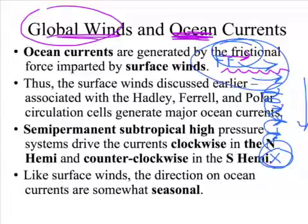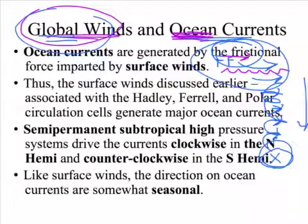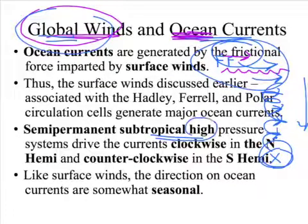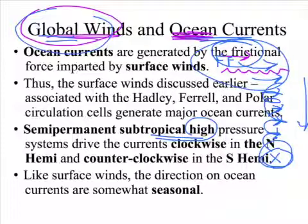We're going to talk about global winds and the ocean currents associated with them. The global winds are associated with the three-cell model on a global scale. I'll count on you to remember the semi-permanent high pressure between the Hadley and the Ferrel cells, and the semi-permanent low — the polar low — between the Ferrel and the polar cell.